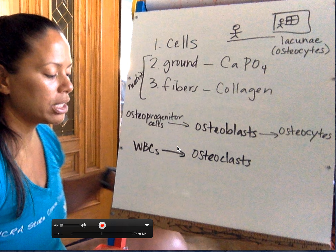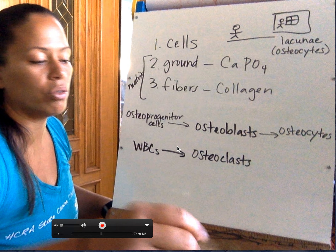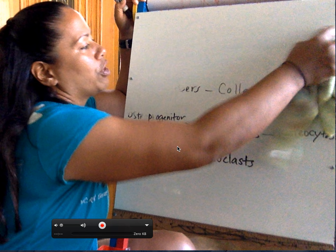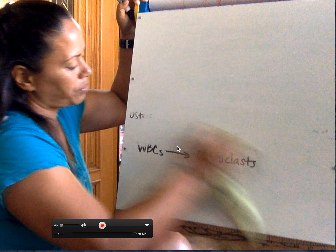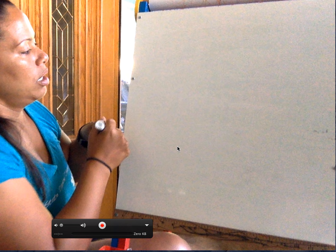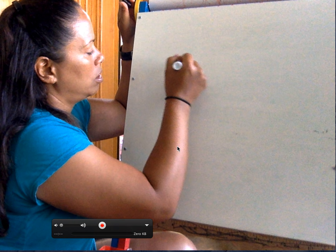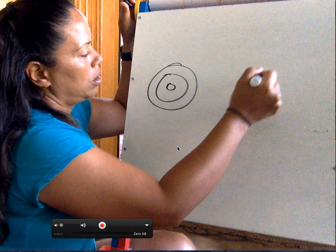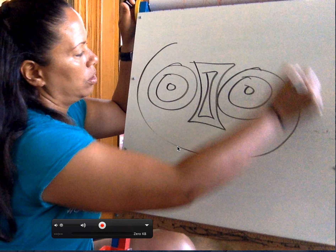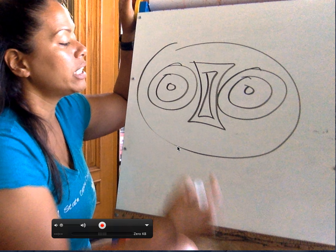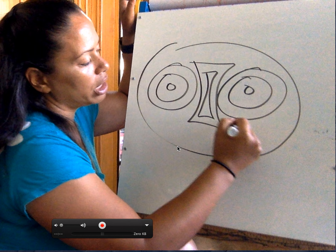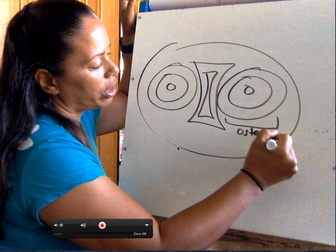So what is an osteon? An osteon is a basic functional unit of bone. Let me do a drawing and see if you guys can figure out what I'm drawing. This is a rendition of bone. The circles here are actually osteons. This whole grouping here is an osteon. But an osteon is a...